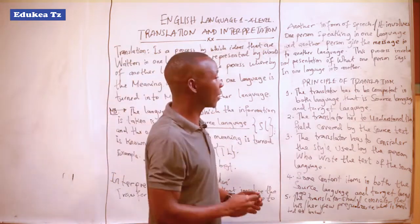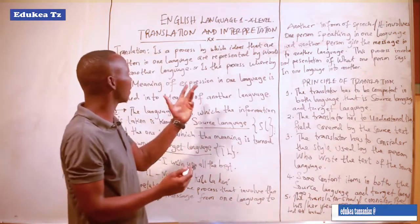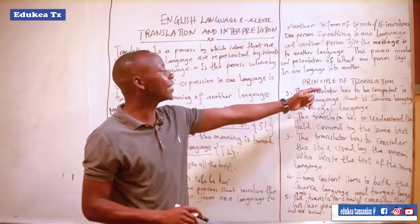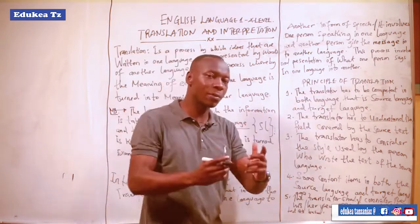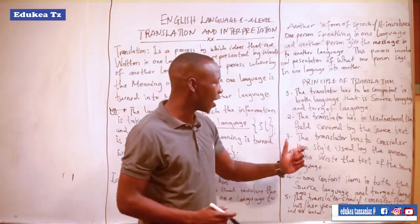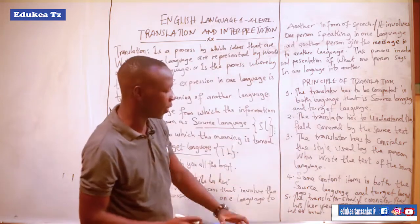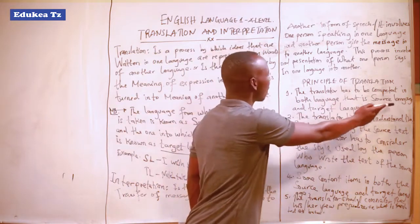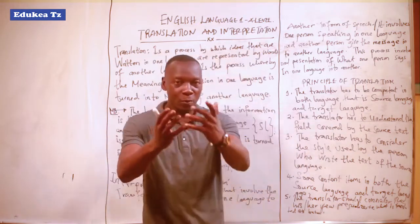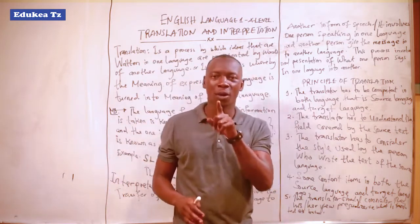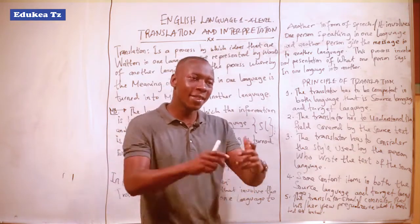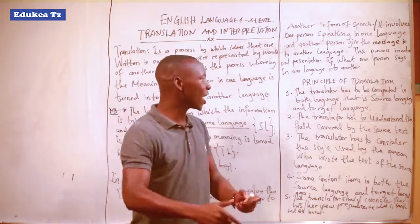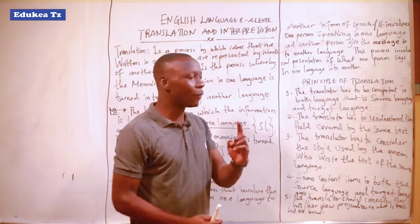Let us continue with the principles of translation — or sometimes called the peculiarities, features, or characteristics of translation. There are many, but I will mention a few. The first principle: the translator has to be competent in both the source language and the target language. To become a good translator, you should be able to use two or more languages, so that you can listen to the speaker's language and translate it to the audience so they can understand.